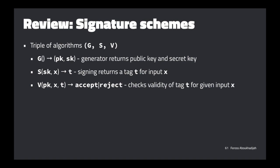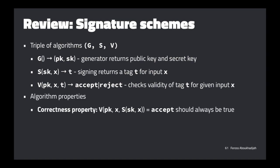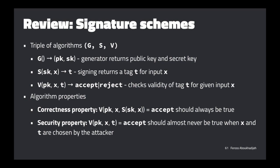For correctness: whenever you take the output of S and put it into V as the tag, you should get 'accept' every time. And we need to ensure this only happens with a tag actually produced from a valid S function. If an attacker gives you a random tag they made up, it should never verify — it should never return 'accept', or if it does, it should be very, very rarely.